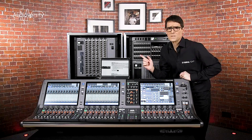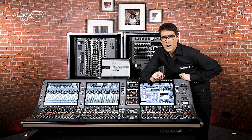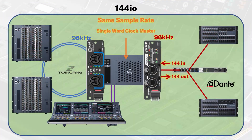The first mode is 144IO, and it makes the card work in the same way as the standard HY144D without sample rate conversion. The Dante network must share the same sample rate and word clock source as the RIVAGE system, and you get the full complement of 144 inputs and outputs.